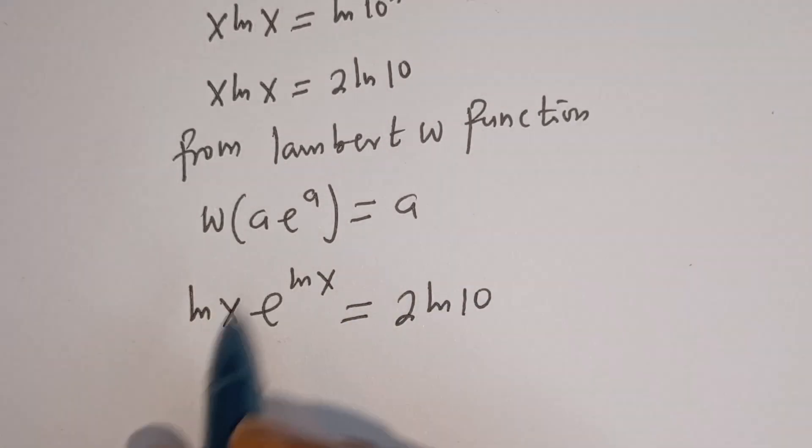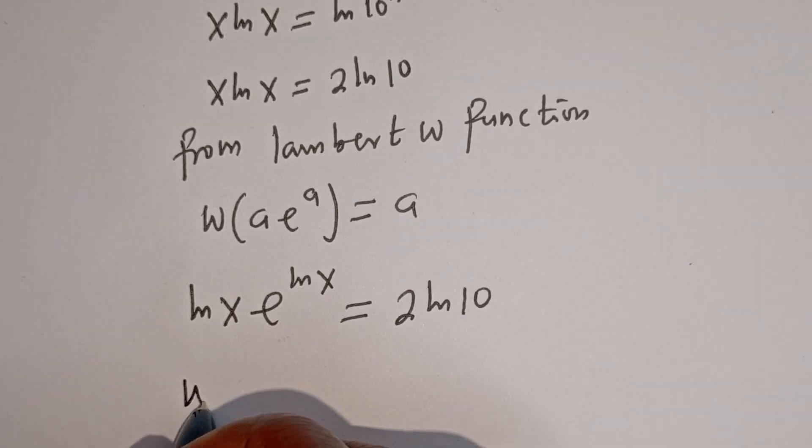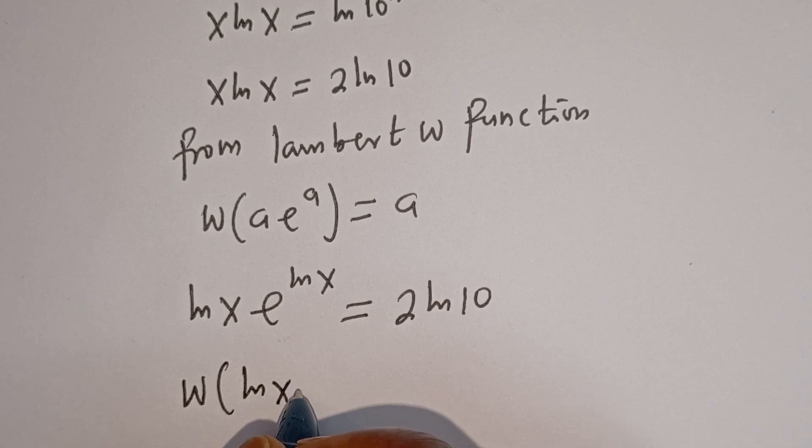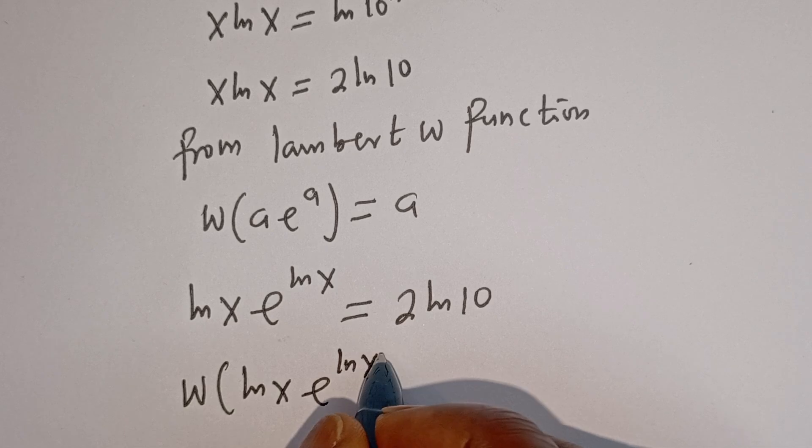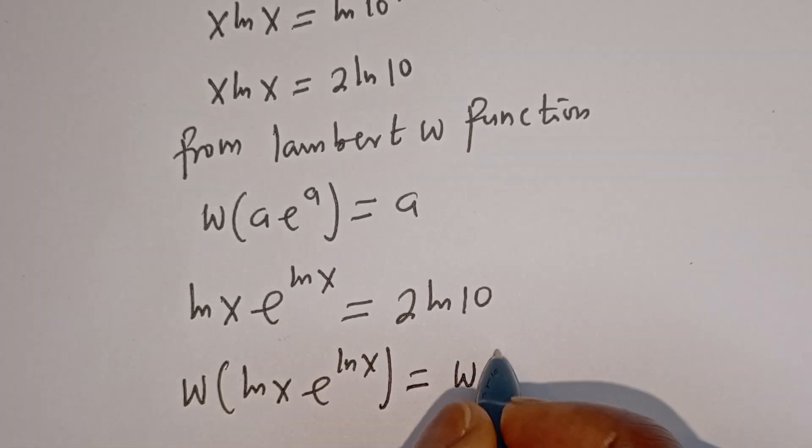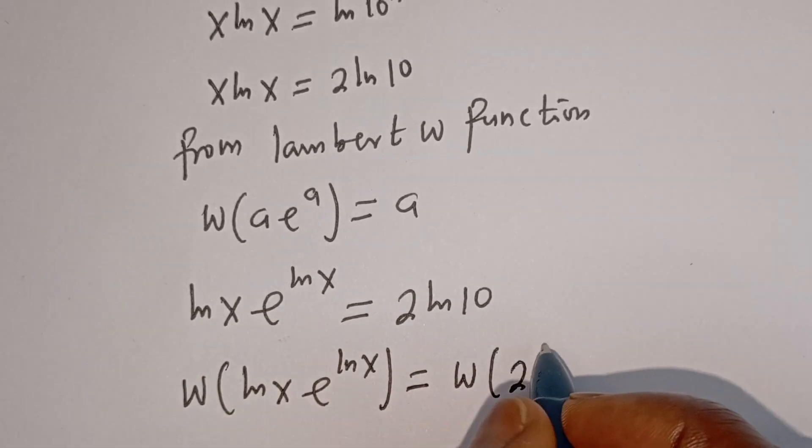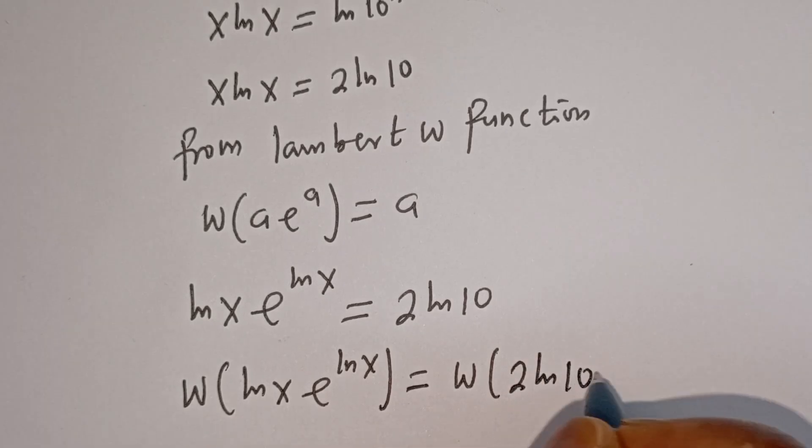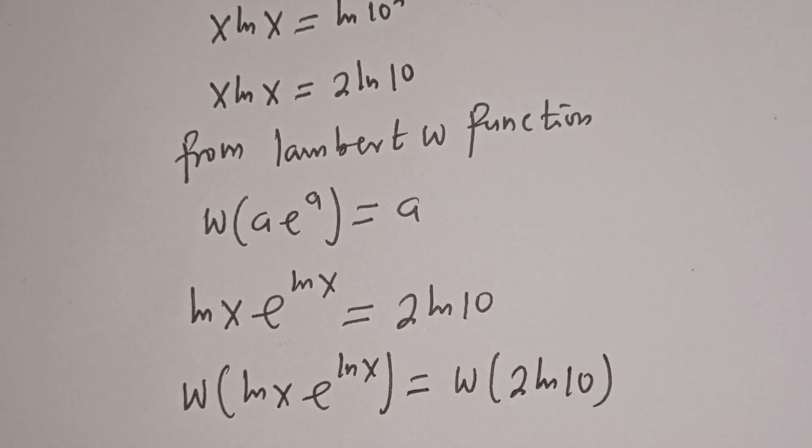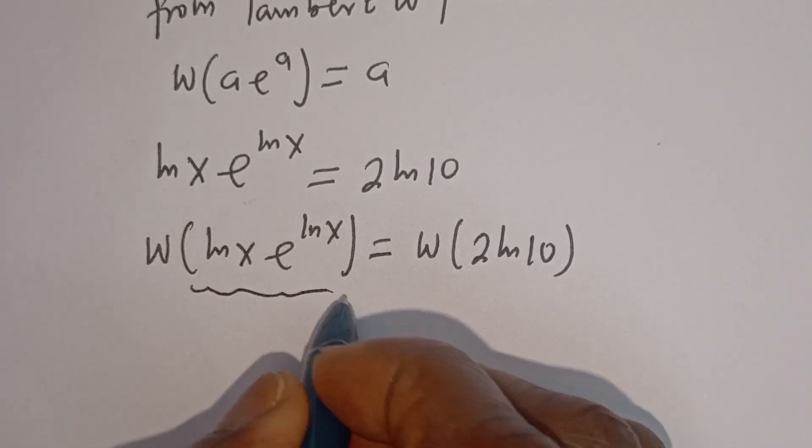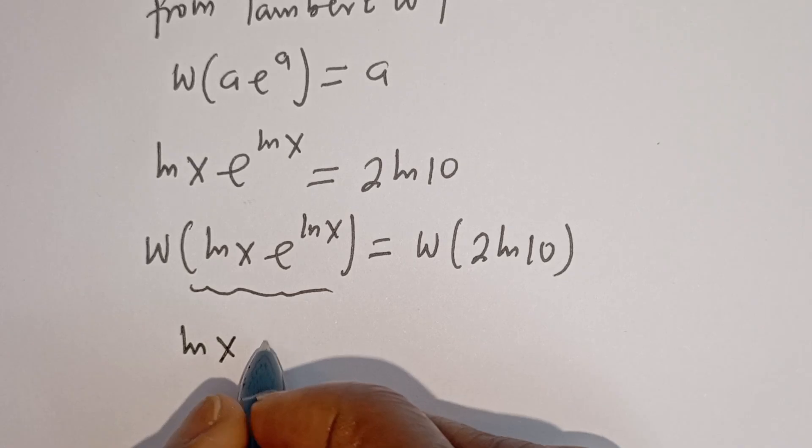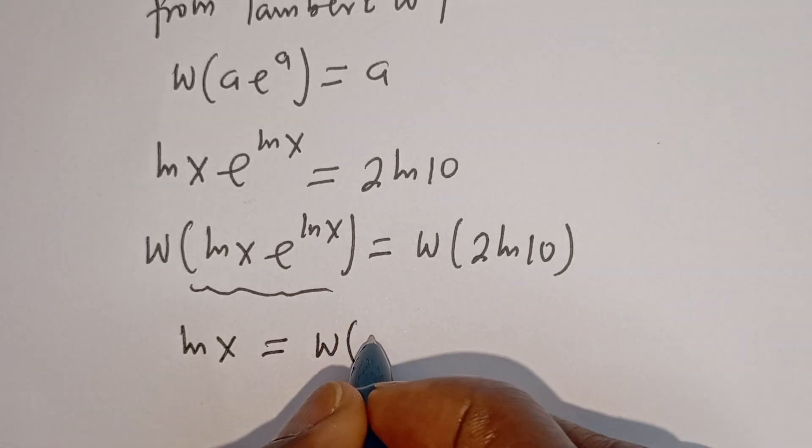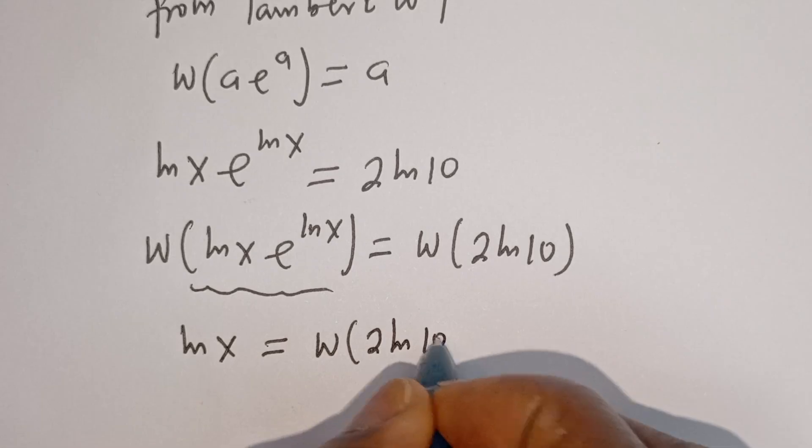So let's introduce W. We have W of ln of S times E to the power of ln of S is equal to W of 2 ln of 10. The whole of this is ln of S, which is equal to W of 2 ln of 10.